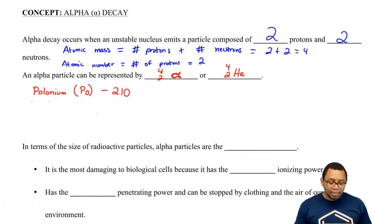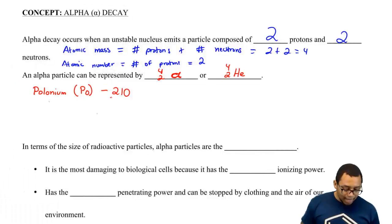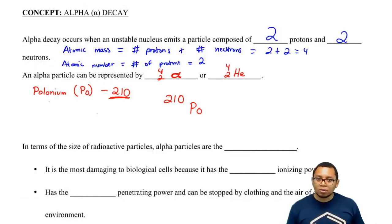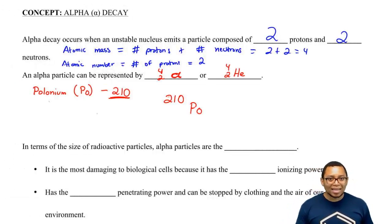So here, polonium-210 means the atomic mass is 210. If you look on your periodic table, polonium has an atomic number, or number of protons, of 84.